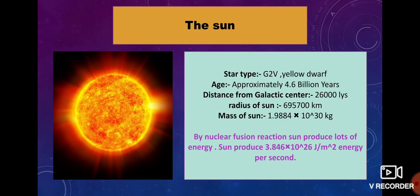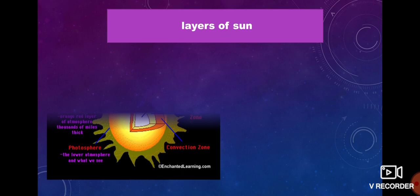Let's start the journey of our beautiful solar system. First is the Sun. The Sun is a type G2 star, and the age of the Sun is approximately 4.6 billion years. The distance of the Sun from the galactic center is 26,000 light years. The radius of the Sun is approximately 695,700 kilometers, and the mass of the Sun is approximately 1.9884 × 10^30 kilograms. All planets are orbiting around the Sun. By nuclear fusion reaction, the Sun produces a lot of energy — 3.846 × 10^26 joules per second.